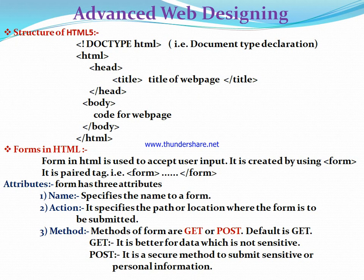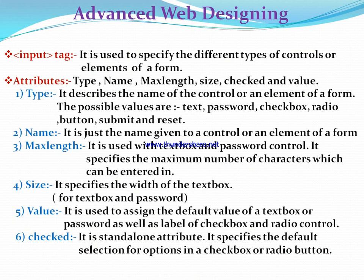The third and most important attribute is method. Method is of two types: get and post. The default method is get. Get is used for data which is not sensitive — if you don't want to secure your data, you can use the get method. If you want to secure the data, the method should be post, as it is a secure method to submit sensitive or personal information. Every form has its controls or elements through which data is accepted. Elements or controls of a form can be placed using the input tag. The input tag is a sub-tag of the form tag and is used to specify different types of controls. It has attributes named type, name, maxlength, size, checked, and value.